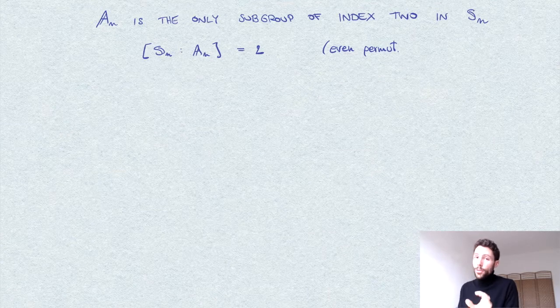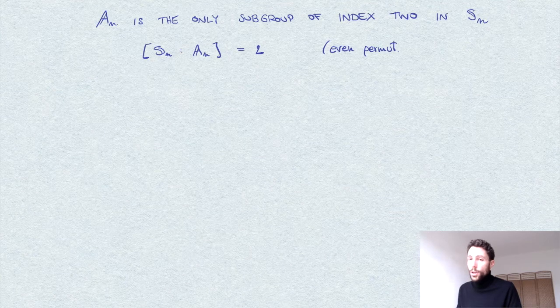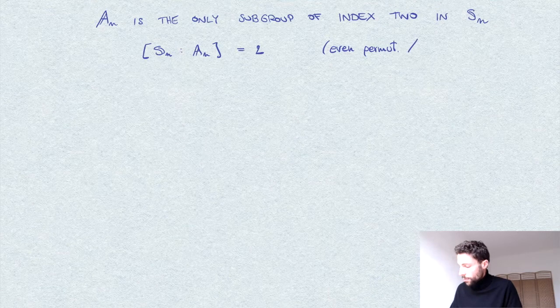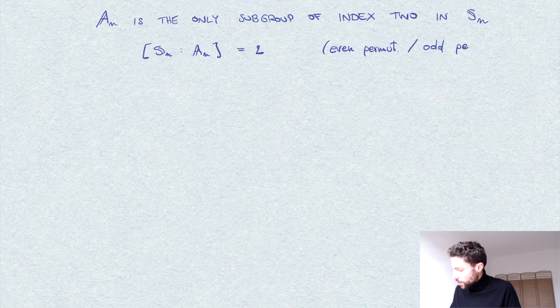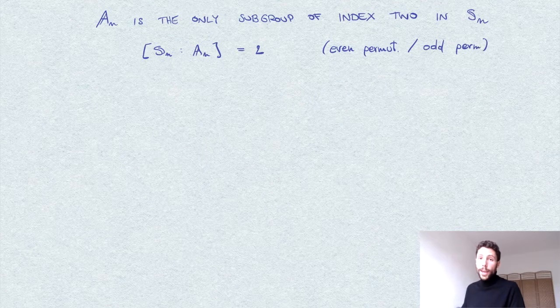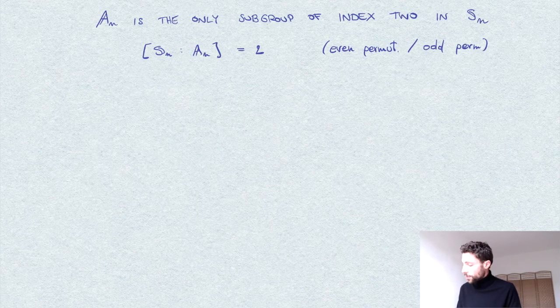So of course one of the cosets is A_n itself, and then the other coset, the only other possible coset, is the one of odd permutations. So all the transpositions and all the products of odd number of transpositions.